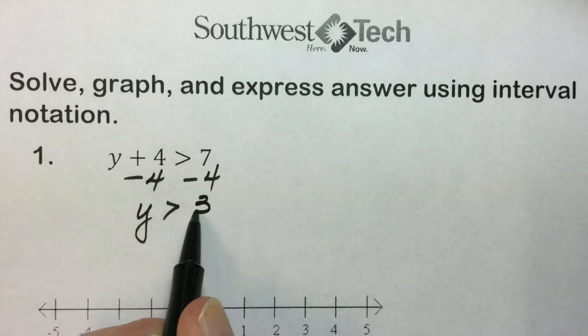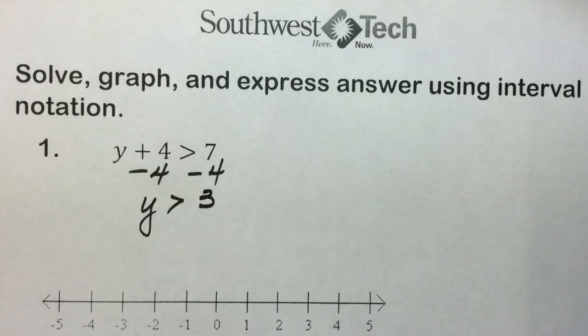y is greater than three. Graphically, we are looking for all values greater than three but not equal to. So we'll put a parenthesis at three and our line indicating our solution with an arrow on it pointing towards positive infinity.